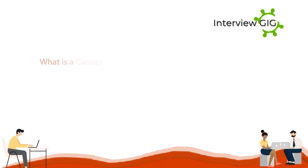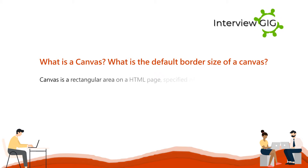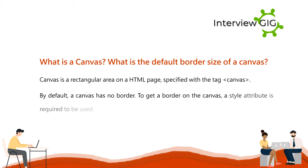What is a canvas? What is the default border size of a canvas? Canvas is a rectangular area on an HTML page, specified with the tag canvas. By default, a canvas has no border. To get a border on the canvas, a style attribute is required to be used.